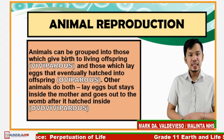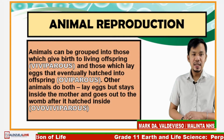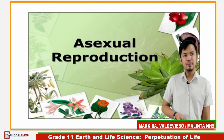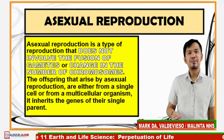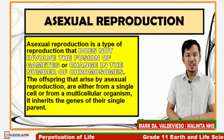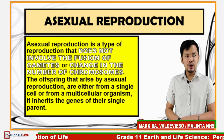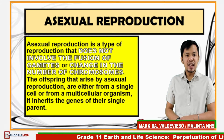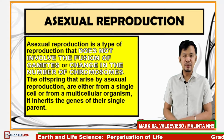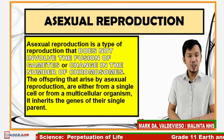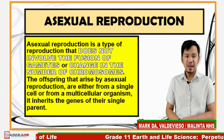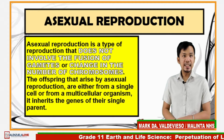Animal reproduction can be done asexually and sexually. Let's begin with asexual reproduction. Asexual reproduction is a type of reproduction that does not involve the fusion of gametes and change in the number of chromosomes. The offspring from asexual reproduction arise from a single cell or multicellular organism, inheriting the genes of their single parent. The different types of asexual reproduction are parthenogenesis, budding, and fragmentation.